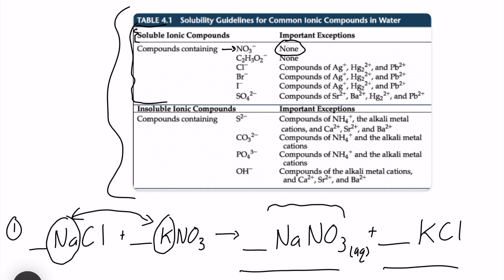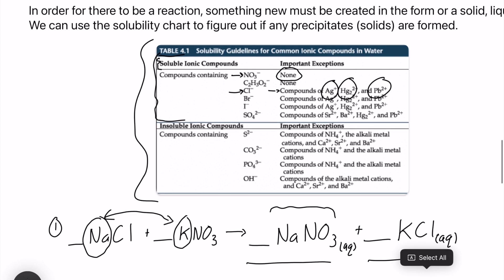Okay, now let's take a look at KCl as well. I see Cl right there. And there are some exceptions. Okay, so when Cl is paired with silver, mercury, or lead-2, it's actually insoluble, which will form a solid. But potassium is not on that list. So it's also going to be soluble, which will make me write AQ for aqueous again.